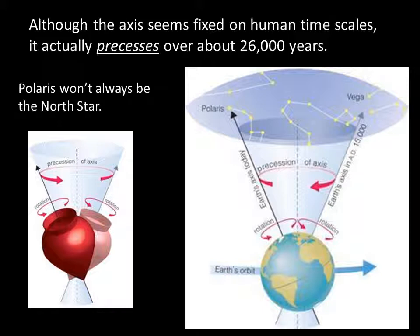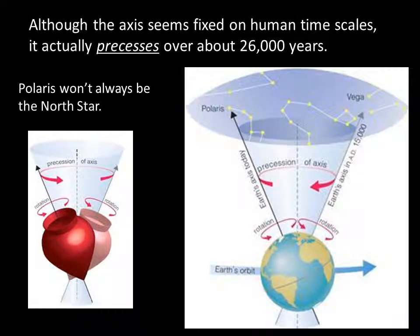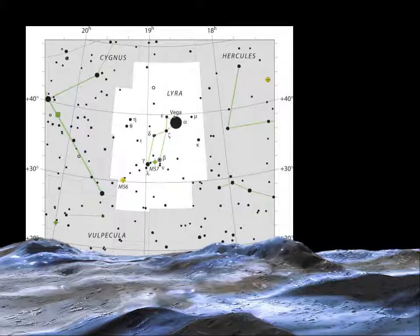Polaris hasn't always been and it won't always be our pole star. In Egyptian times, the star Thuban in the constellation of Draco was closest to the pole. In the future, in 15,000 AD, Vega will be our pole star.